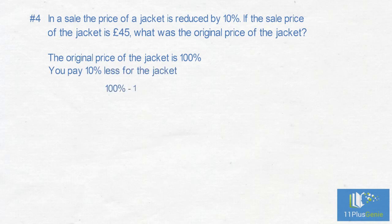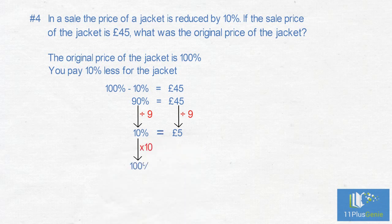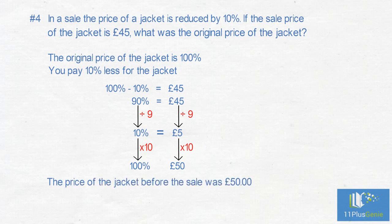100% take away 10% equals £45. So 90% equals £45. We divide by 9 to get 10%. 90% divided by 9 equals 10%, and £45 divided by 9 equals £5. So we now have that 10% is equal to £5. We now times by 10 to get 100%, which gives us £50. The price of the jacket before the sale was £50.